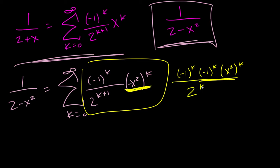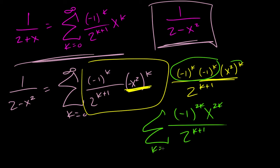And if we multiply those together we get negative 1 to the 2k, just adding exponents, then x to the 2k by doing that, and I'll bring my summation back in here.